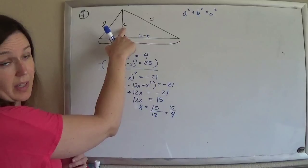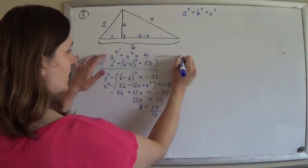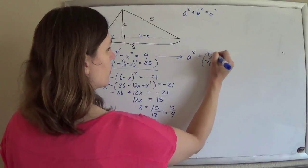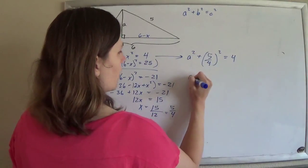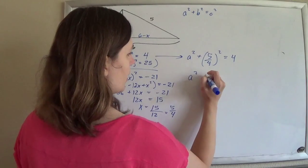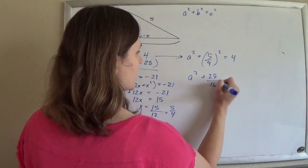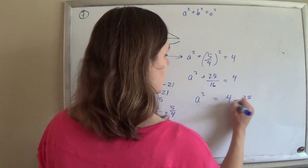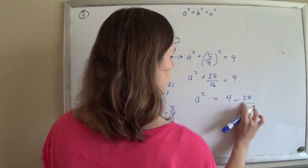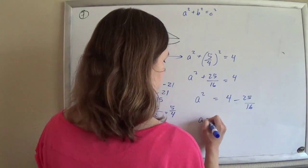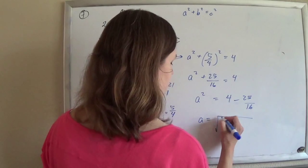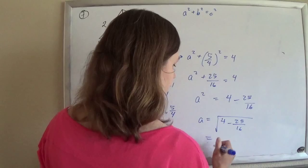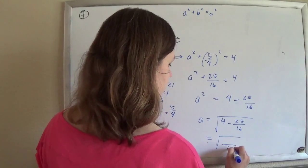And of course, that's not what they wanted. They wanted the a. But that's okay. Just plug it back into either one of your original equations. a squared plus 5 over 4 squared is going to give me 4. So a squared plus 25 over 16 will be 4. So a squared will equal 4 minus 25 over 16. So a will be the square root of this thing. So 4 minus 25 over 16.